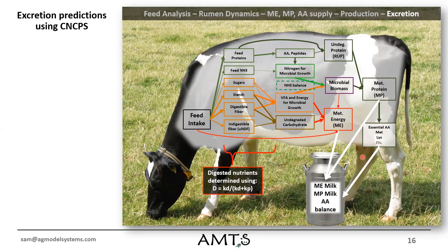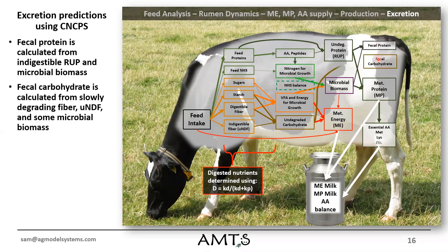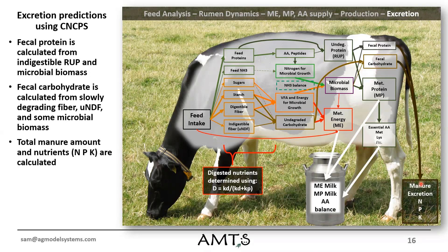The other part of the model — and this is kind of where most nutritionists tend to stop — is at the ME and MP-level milk and amino acid balances. But the model also has a lot of capability to estimate some of the excretion parts of the equation. We can take the undegraded feed protein that contributes to fecal protein, some from microbial biomass, and some fecal carbohydrate calculations. What we actually get from that is the ability to calculate amount of manure excretion along with N, P, and K. This can be helpful from a nutrient management planning standpoint, and it does a fairly good job of helping us estimate the efficiency of nitrogen utilization or phosphorus excretion based on the different diets that we feed.